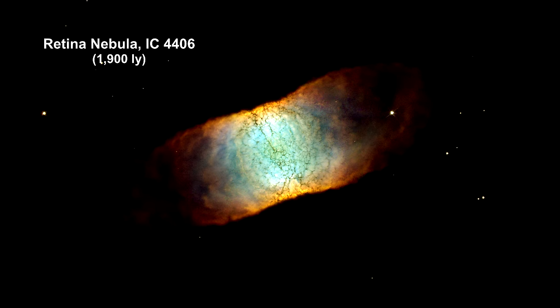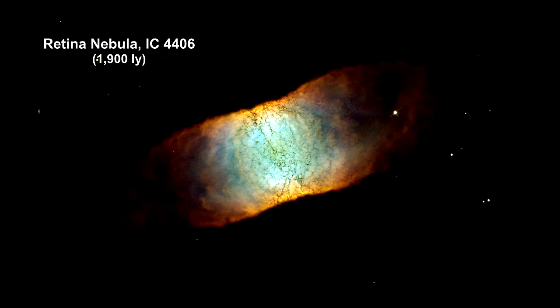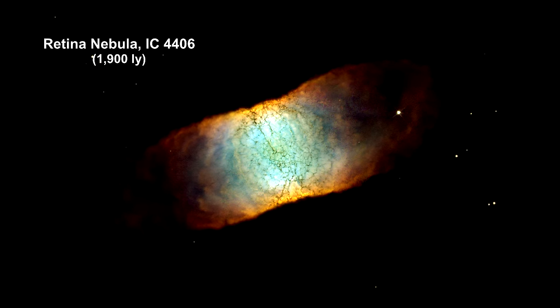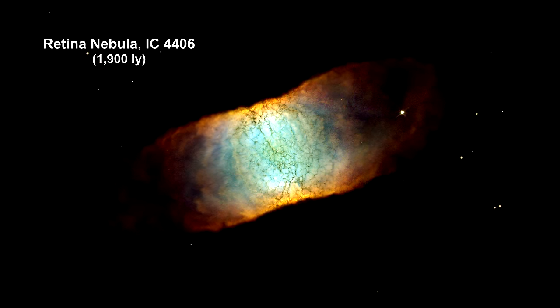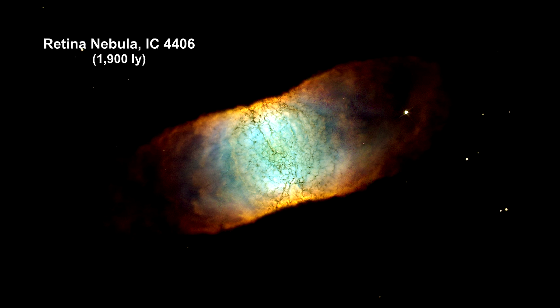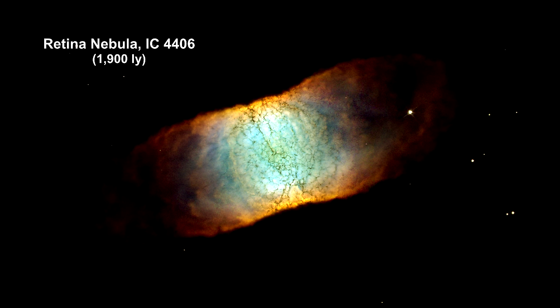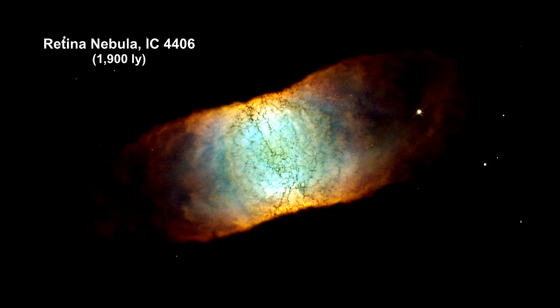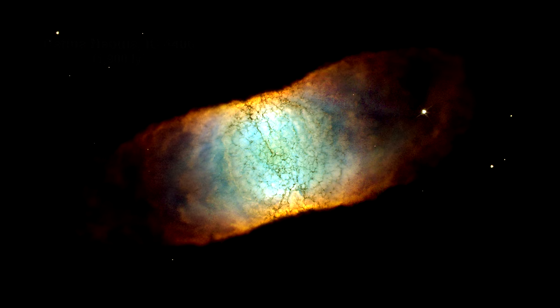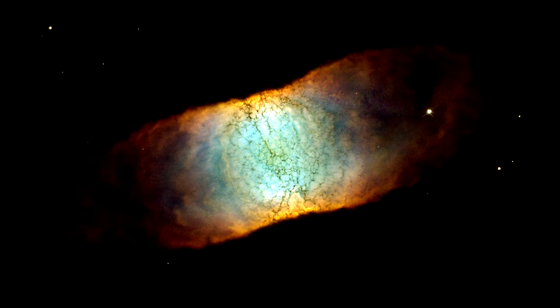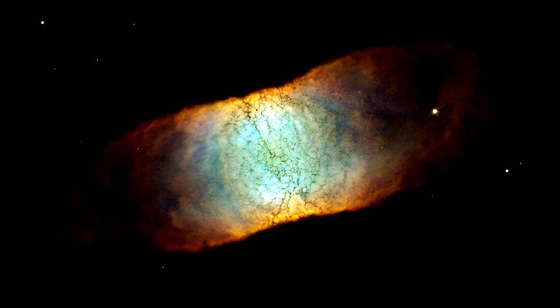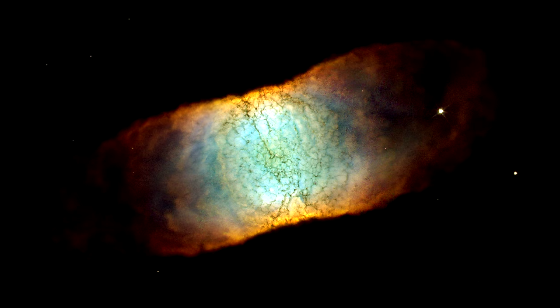Our first planetary nebulae were facing the Earth so that we could see down the tube. On this one, the Retina Nebula, we are viewing the donut from the side.